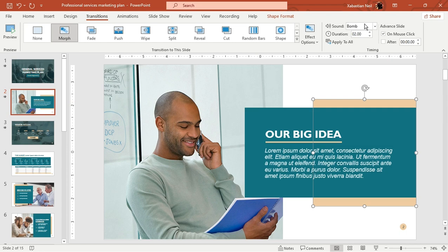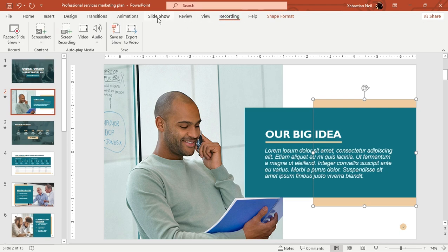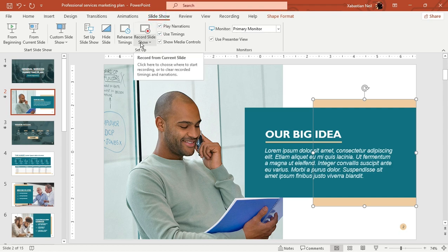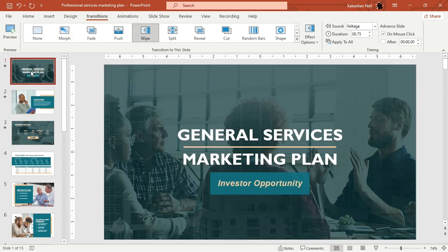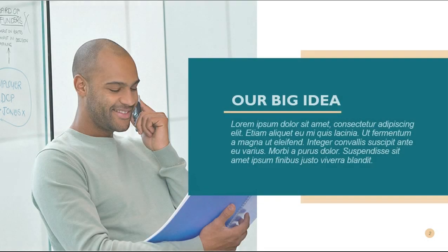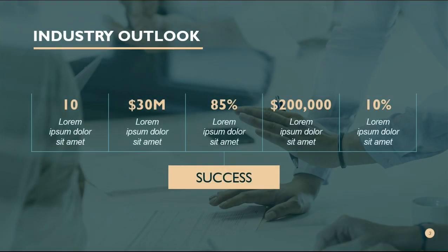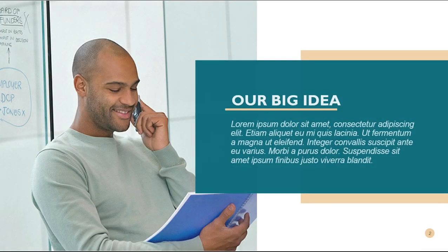Another option here is the Advanced Slide setting under Timing. This lets you set slides to advance automatically after a specific time, rather than on a mouse click. You can go to Slideshow and record your timings, or manually enter a time here. For example, let's set it to 5 seconds and uncheck On Mouse Click — now the slide will automatically advance after 5.5 seconds without using the navigation button or mouse.